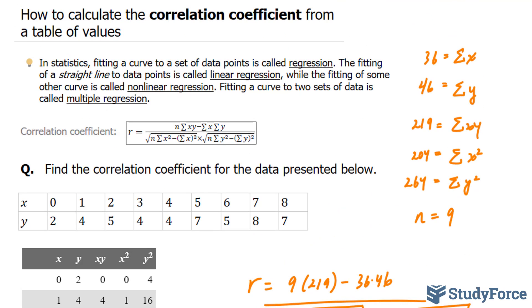And so there you have it. That is how to calculate the correlation coefficient from a table of values.